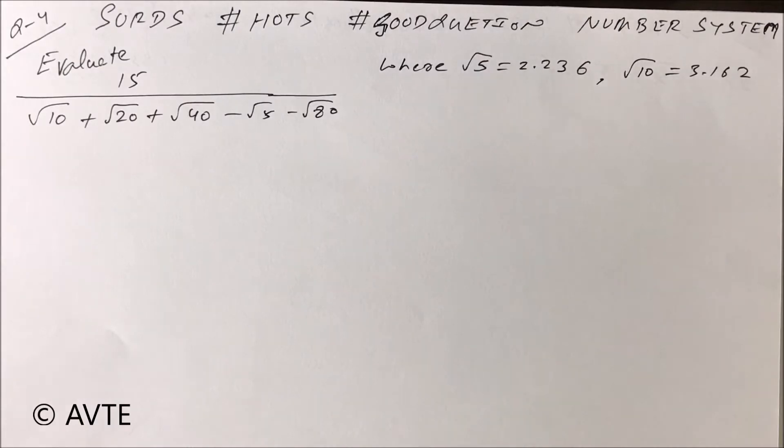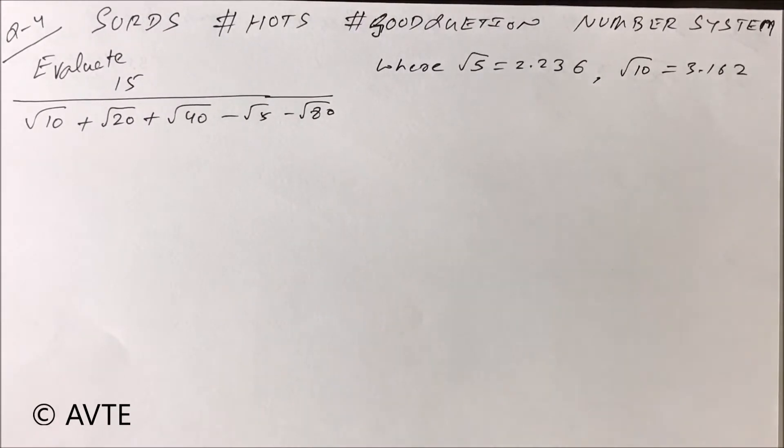Hello friends, in this series of SIRDS hot questions under topic number system, we are doing question number four. I hope you have seen the previous questions, question number one, two, and three. In this question, you have to evaluate the given radical form.